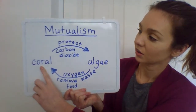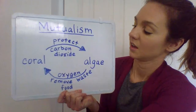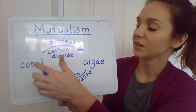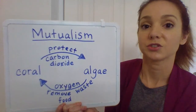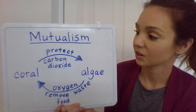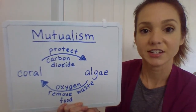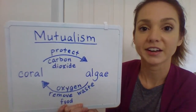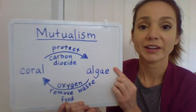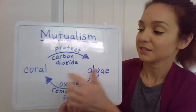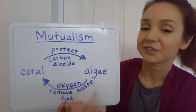Coral makes these rocky formations that house algae. Because it makes that rocky formation that algae can live in, it offers protection to algae from getting crushed in the waves or getting eaten by other animals. The coral is offering protection to algae, but it's also offering carbon dioxide to algae. As you know, animals breathe out carbon dioxide, and plants need carbon dioxide to do photosynthesis — the process where they make their own food. So algae lives inside the coral, and the coral is giving the algae this gift of protection and also this gift of carbon dioxide.